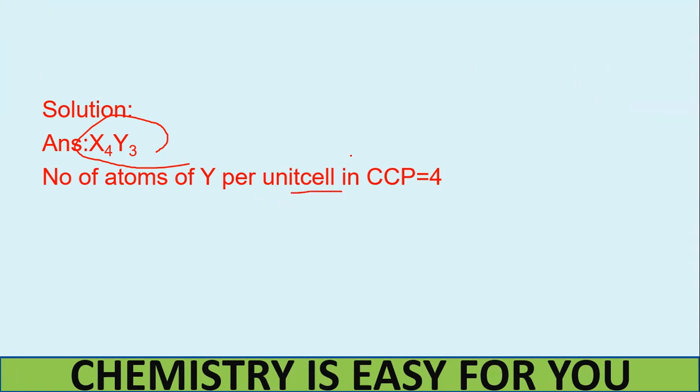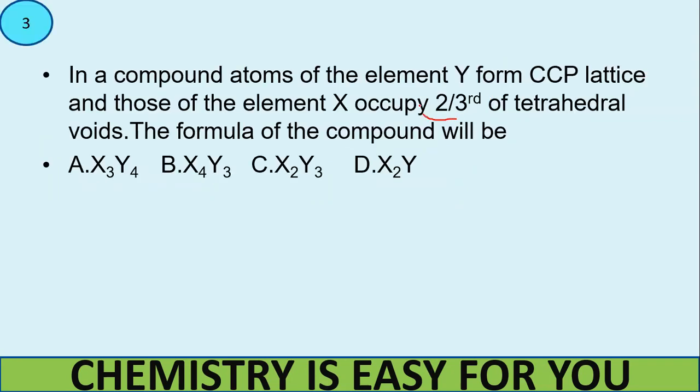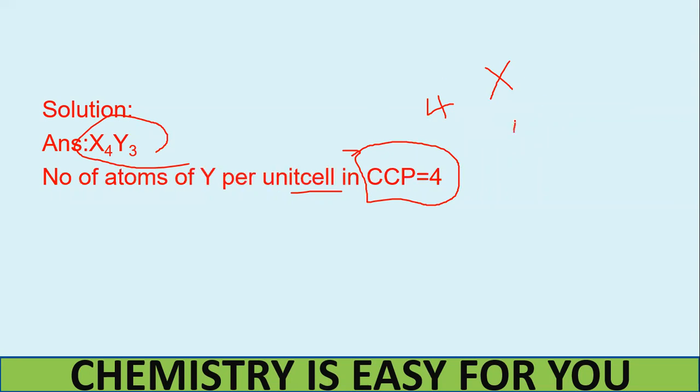So number of atoms of Y per unit cell: in CCP or cubic closed pack structure, the total number of atoms is 4. Y occupies the cubic closed pack form, so it means there will be 4. Number of atoms of Y per unit cell would be CCP, so Y occupies the cubic closed pack structure. So the total number would be 4. Now what is the next point that is given? Two by third of the tetrahedral voids is occupied by element X. So see, if we have N number of atoms in a particular unit cell, there will be 2N number of tetrahedral voids and N number of octahedral voids. So N is the total number of atoms. So 2N tetrahedral voids and N octahedral voids will be present.